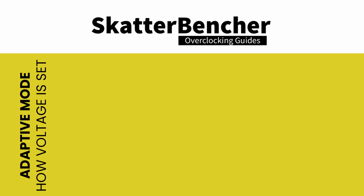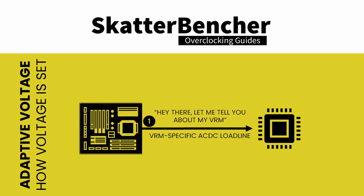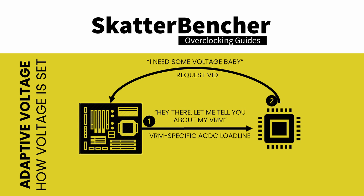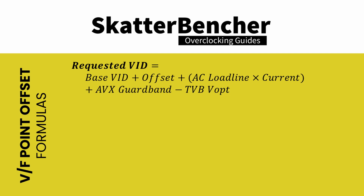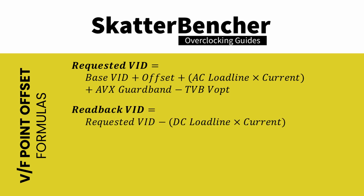In adaptive voltage mode, there are 3 steps to how your system sets the CPU voltage. First, the motherboard's BIOS tells the processor the current load line characteristics via AC-DC load line values. Then, the CPU will request a voltage from the voltage controller based on its own VF curve using the base VID configuration, adjusting for the current load line characteristics as well as any of the other voltage offsets. Finally, the voltage that reaches the CPU is the requested voltage minus any undershoot or overshoot from the VRM load line. To put it in formulas: requested VID = base VID + offset + (AC load line × current) + AVX guard band − TVB voltage optimization. Readback VID = requested VID − (DC load line × current).